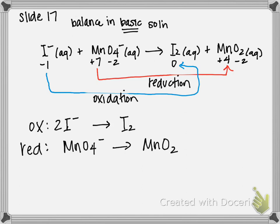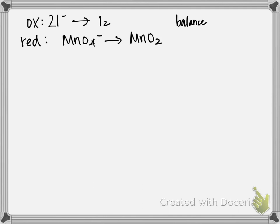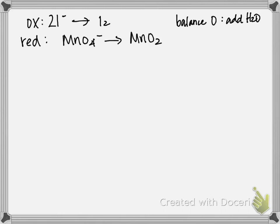Step 3 I'm going to do on another slide. So I'm going to rewrite my oxidation: 2 I minus gives you I2. And my reduction is going to be MnO4 minus gives you MnO2. So remember the third step is when we balance oxygen and hydrogen. So to balance oxygen, add H2O. And to balance H, we add H+. And the extra step that we have to do, because this is basic, is we have to basically neutralize any H+ that we make by adding OH minus.